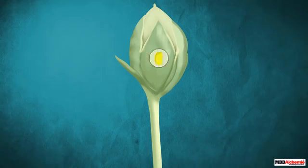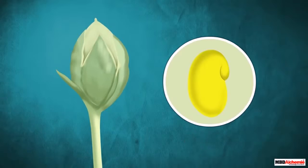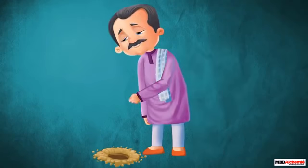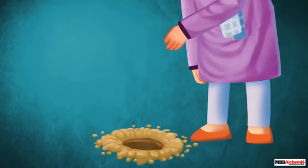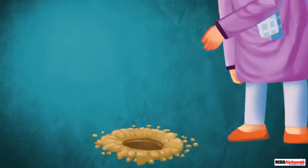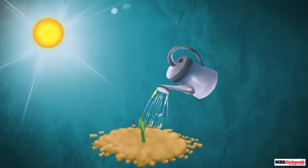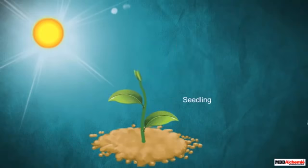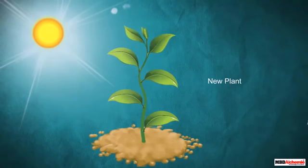So a seed present inside a fruit contains an embryo, which is actually a baby plant. Each time a seed is planted in soil and provided appropriate conditions, it grows into a seedling, which then grows into a new plant.